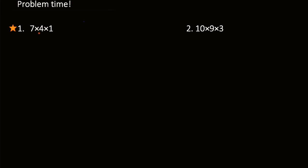First up we have 7 times 4 times 1. Again, we can use the associative property, but since we have 1 here, we don't really need to. So instead we just do 7 times 4, which is equal to 28. So this would be equal to 28.